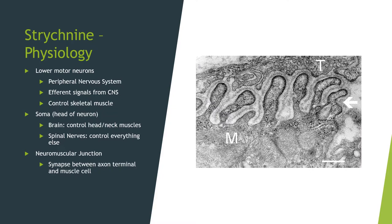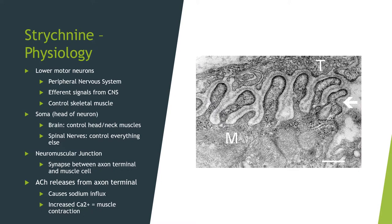When enough calcium concentrates in the axon terminal due to an excitatory action potential, it binds with acetylcholine (ACh) and exocytosis releases ACh into the synaptic cleft. ACh binds to nicotinic ACh receptors on the muscle fiber, causing a sodium influx that depolarizes the cell. Calcium then enters, causing the sarcoplasmic reticulum to release more calcium, which is then used for the sliding filament theory of muscle contraction.